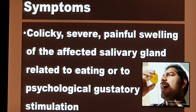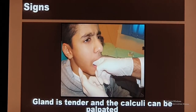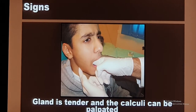Coming to the complaints — the main complaint is related to food. Whenever the patient thinks about food, smells it, or begins to eat, he gets severe pain just below the mandible in the upper part of the neck, possibly with some swelling. On examination, there may be swelling below the mandible, and by palpating just below the tongue along the duct, we may be able to feel the calculus. If it is in the gland itself, we will not be able to appreciate it as much.